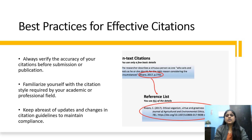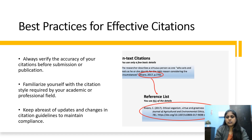Best Practices for Effective Citations. Always verify the accuracy of your citations before submission or publication. Familiarize yourself with the citation style required by your academic or professional field. Keep abreast of updates and changes in citation guidelines to maintain compliance. In-text citations mention the author name and where the information was obtained, including the page number. In the references list or bibliography, all details of the author are mentioned — whether it is a journal and the year it was published.